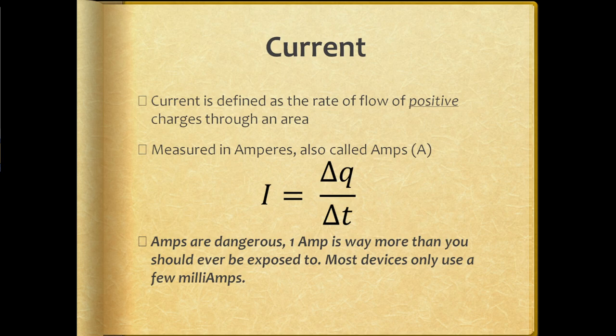As water flows, you could put a water wheel into the water, and the motion of that water over the water wheel imparts energy into the water wheel. Electric current moving through things is how electricity gives energy to stuff — it's how electricity is able to carry energy from one place to another. The more charge passes through something per unit time, the more current you have.